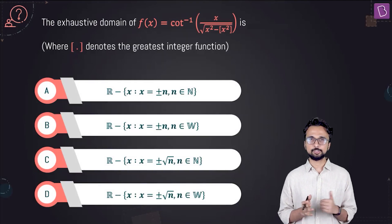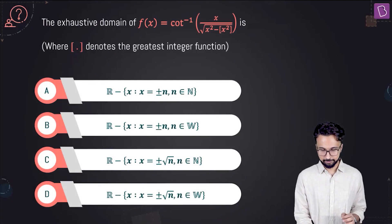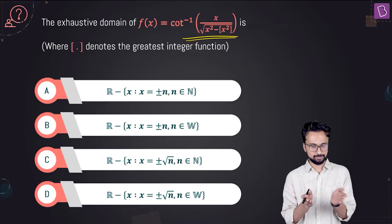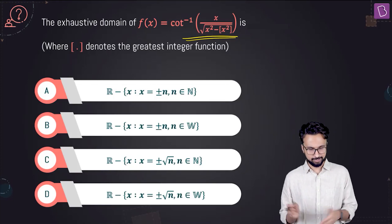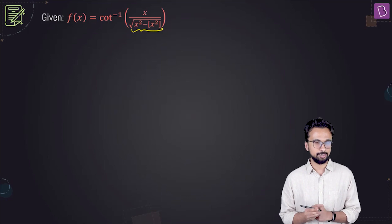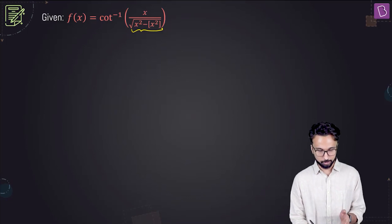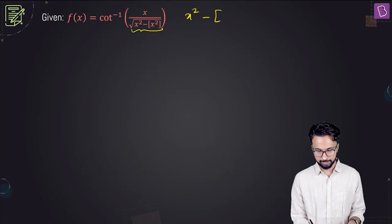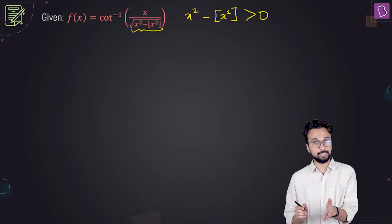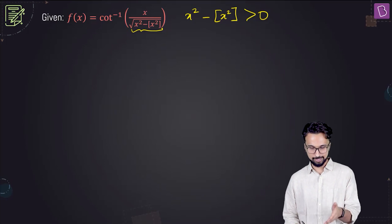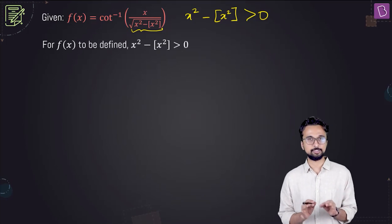Now look at this question: we are asked to find the exhaustive domain of cot inverse of x divided by root of x squared minus the greatest integer function of x squared. Since there is a square root in the denominator, the expression inside — x squared minus GIF of x squared — must be strictly greater than 0, because if it equals 0, the denominator becomes 0.